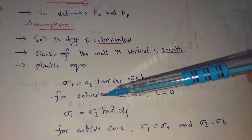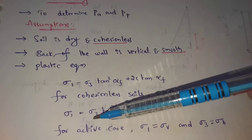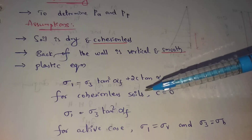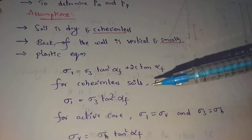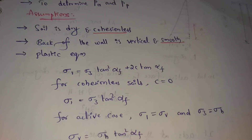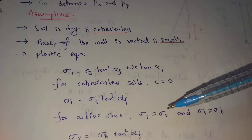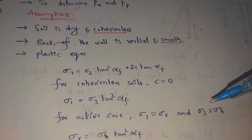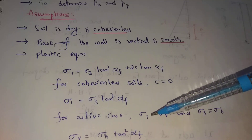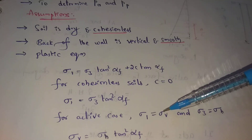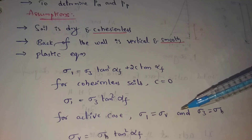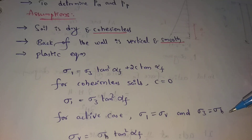So the equation simplifies to: sigma1 equals sigma3 times tan squared alpha-f. For the active case, sigma1 is the major principal stress equal to vertical stress, and sigma3 is the minor principal stress equal to horizontal stress.